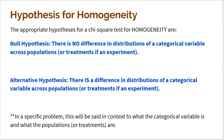The null hypothesis is that there is no difference in the distribution of a categorical variable across populations. So, if 10% use Ford, it would be the same for every country; if 15% use Chevy, it's the same for all countries. The alternative is that there is a difference in the distribution across those populations. It only takes one category being different to reject the null — for example, if Ford is the same across countries but Chevy is not, the distributions are not the same.